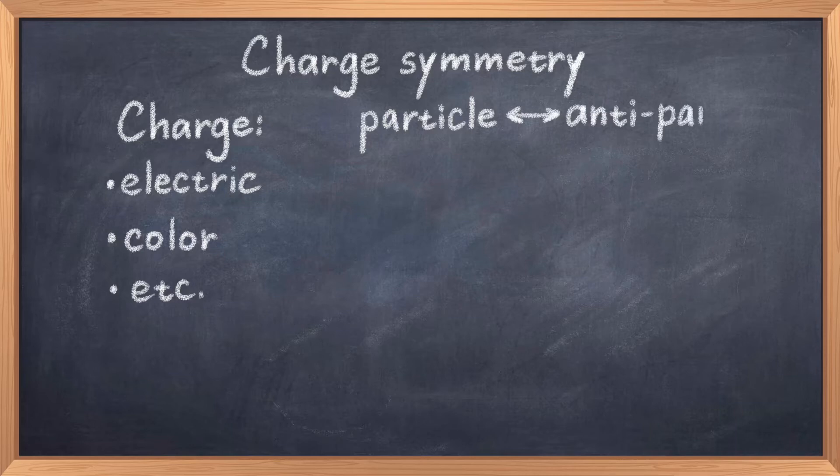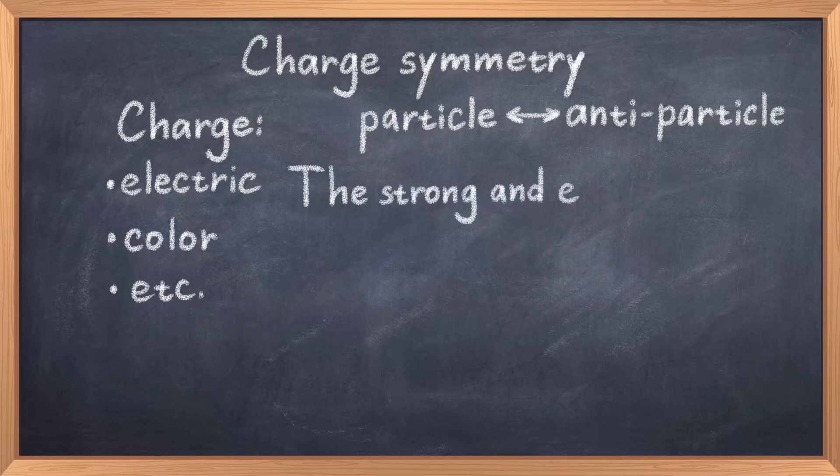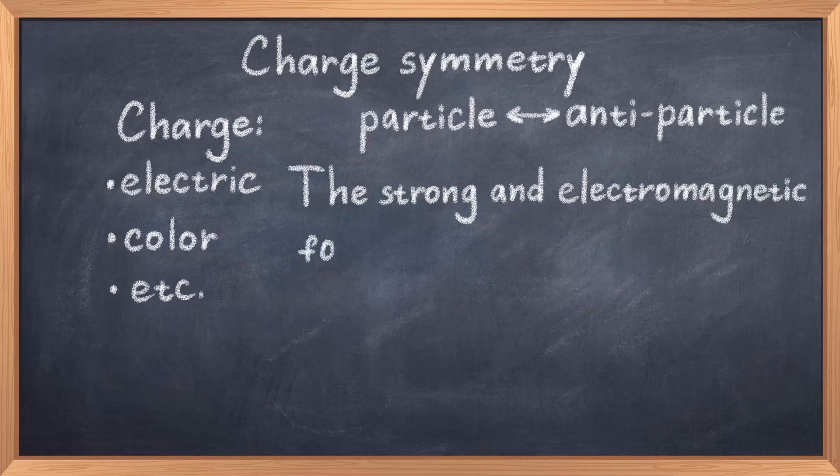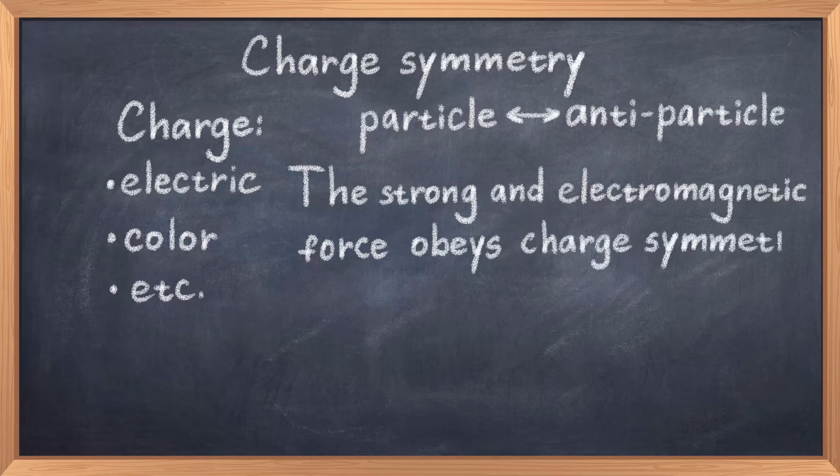As you might know, antiparticles are particles where all the charges have the opposite sign compared to their particle counterpart. Thus, charge symmetry is all about symmetry between particles and antiparticles. If you do a charge conjugation transformation of a particle, you get an antiparticle. In principle, this symmetry ensures equality between matter and antimatter, but as we discovered in the 50s, this symmetry is broken by the weak force.